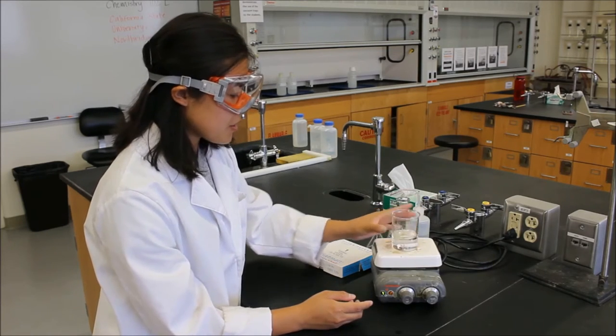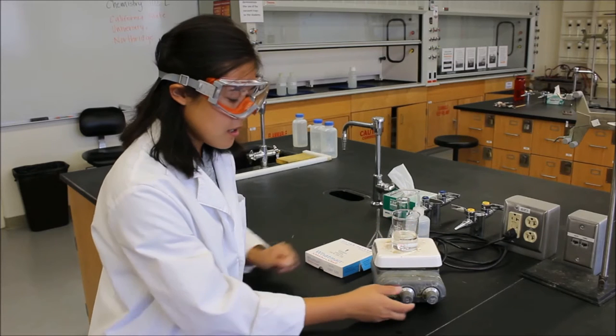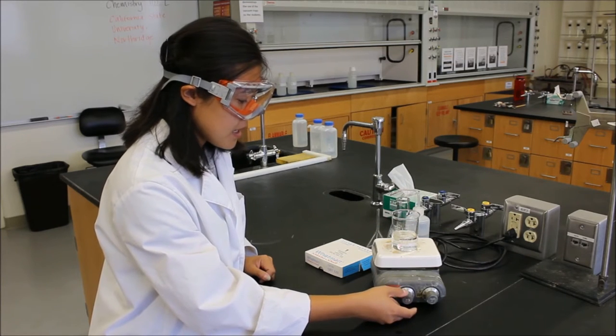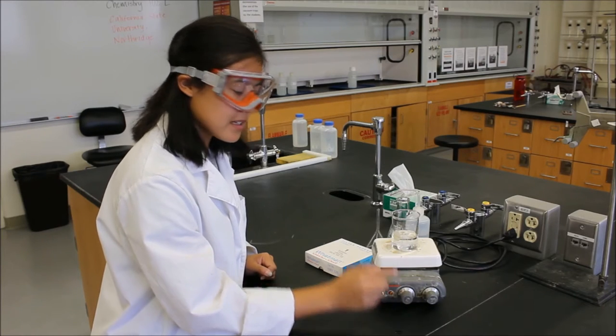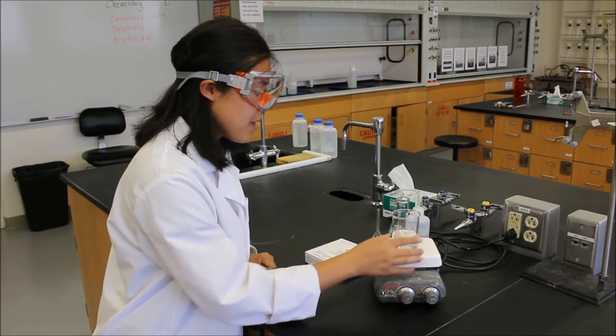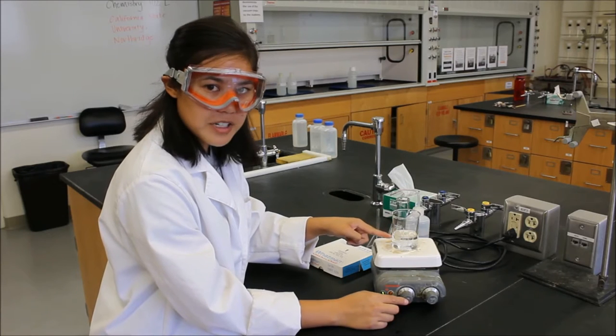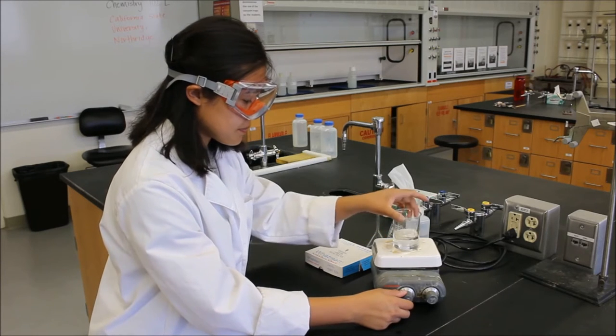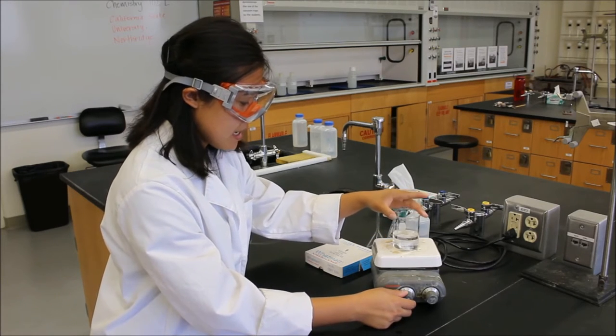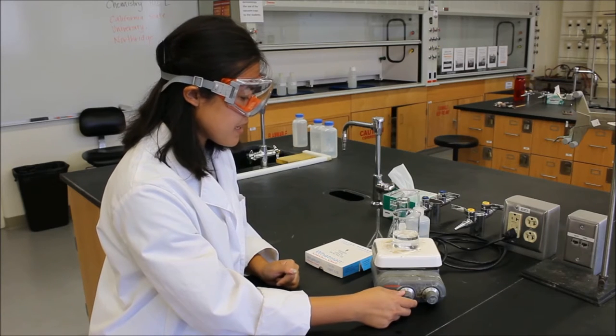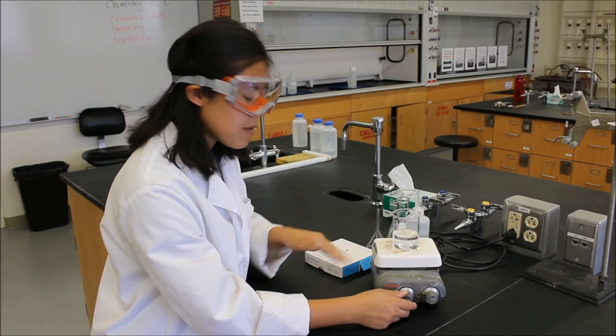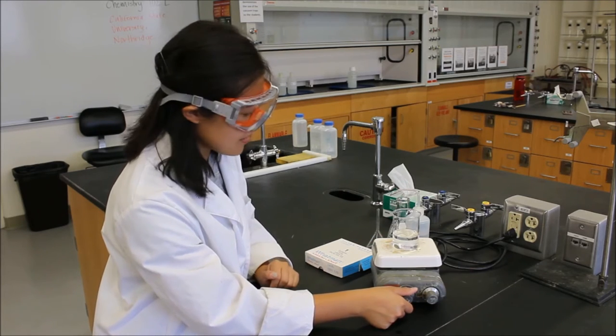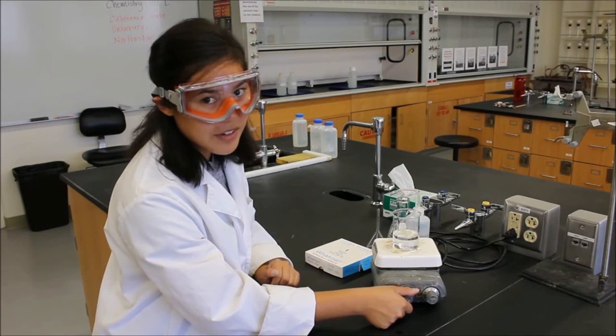So once we have our stir bar inside our solution, we can turn it on to stir. And instead of looking at the numbers, what we want to look at is the solution. We want to be able to see a small vortex in our solution. And we want it to be spinning fast enough so that we can see a vortex and it's mixing, but not so fast that it's splashing. Because once it splashes, we start losing solution. And that's never good in an experiment.